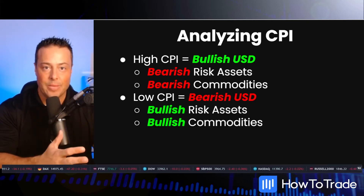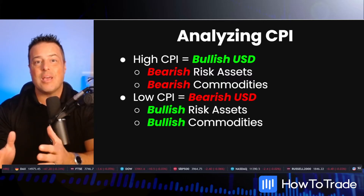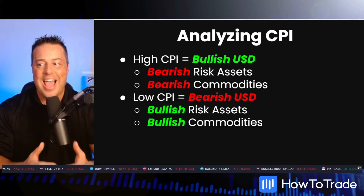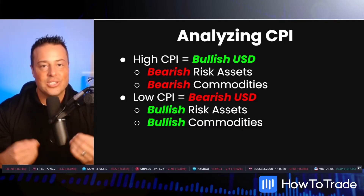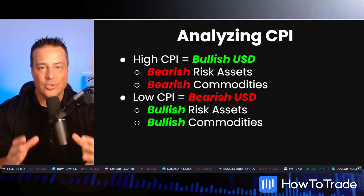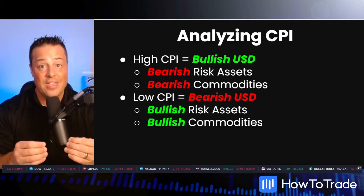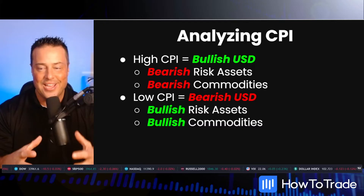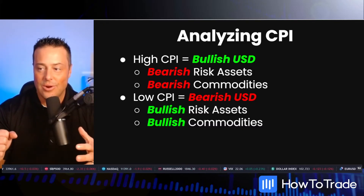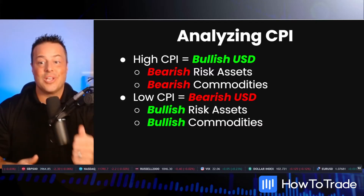On the other hand, a low CPI, when you have something that comes in beneath expectations and beneath the previous release, it actually leads to a bearish USD. Because the central bankers are less likely to step in and intervene to control that runaway inflation. So you have a weakened US dollar, which leads to bullish risk asset pricing and bullish commodity pricing.